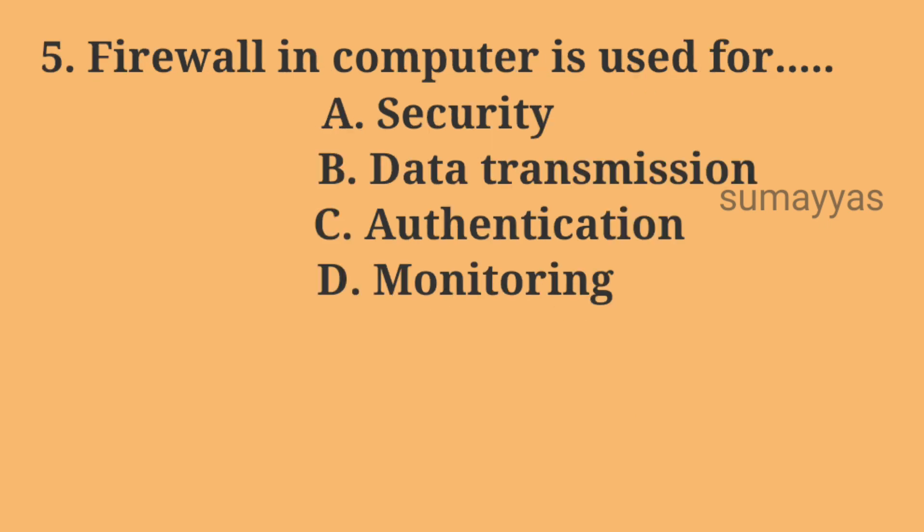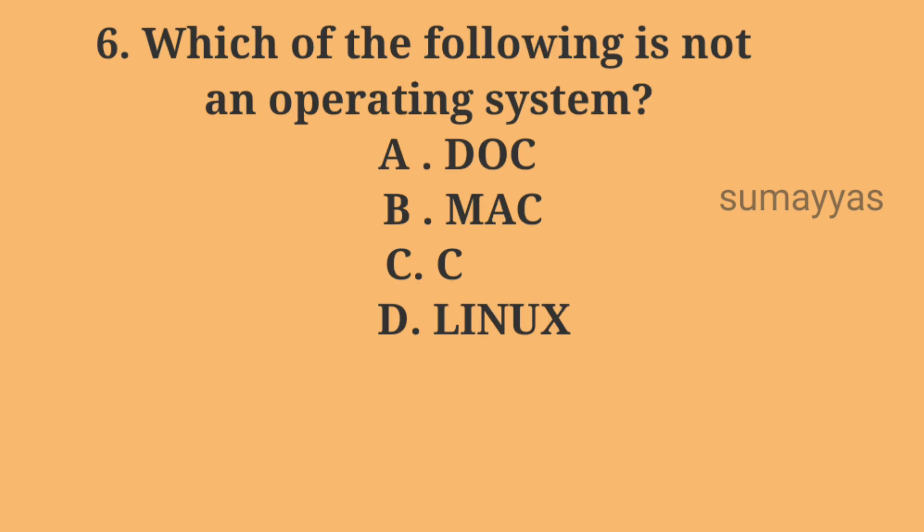Question number five: a firewall in a computer is used for — Option A: Security. Option B: Data Transmission. Option C: Authentication. Option D: Monitoring. The correct answer is Option A: Security.